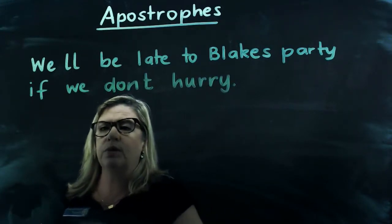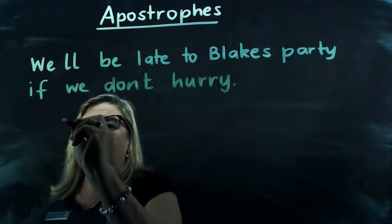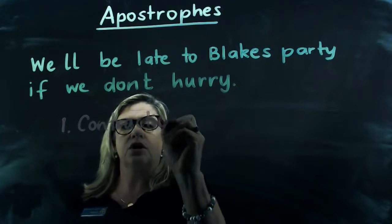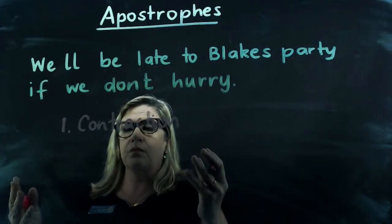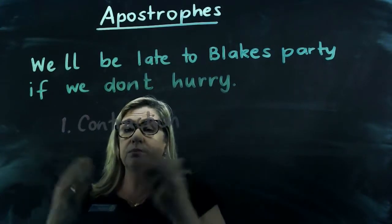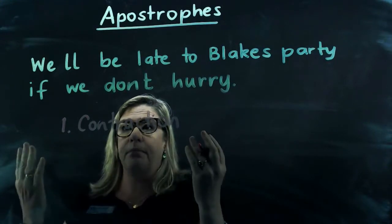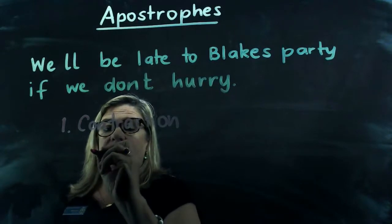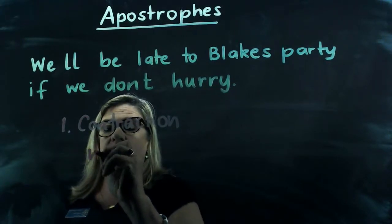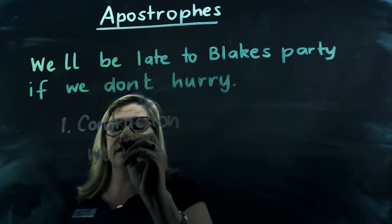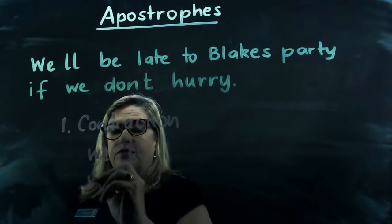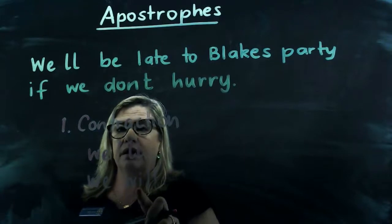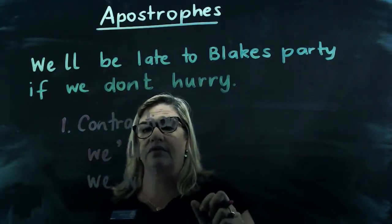The only times we ever use apostrophes: the first one is for contractions. Contractions are when we want to shorten two words, put them together, and some letters pop out — we put an apostrophe where those letters would be. So a word like 'we'll' is short for 'we will' — the W and the I pop out and we replace them with an apostrophe.